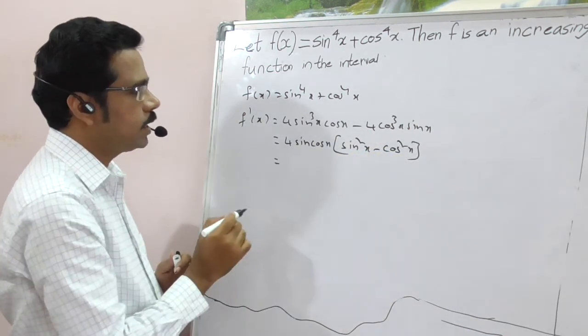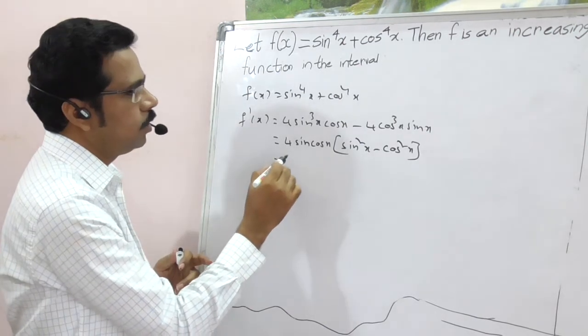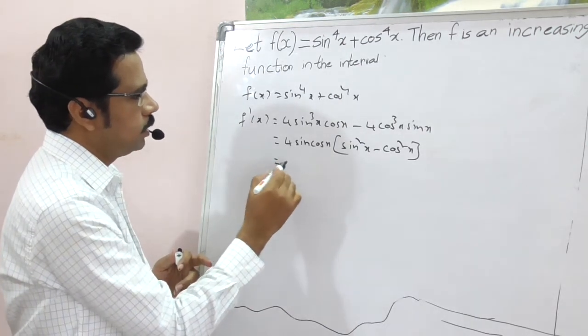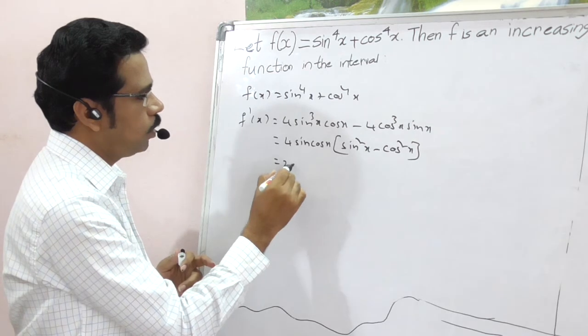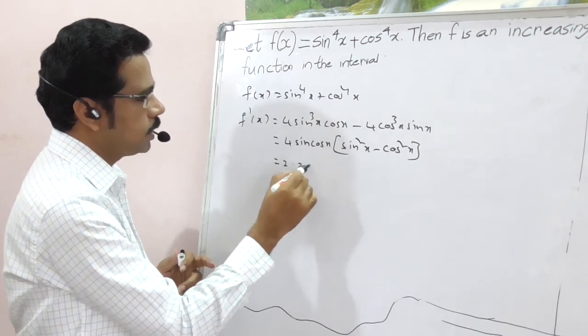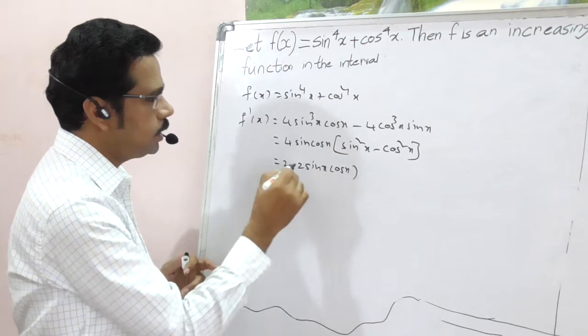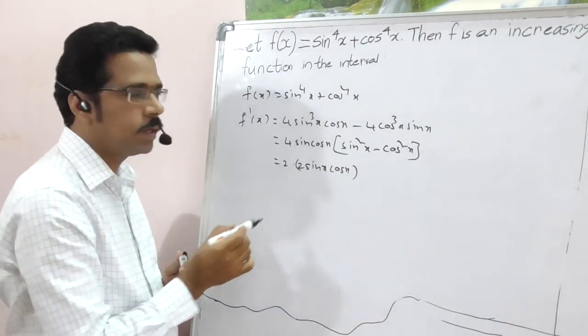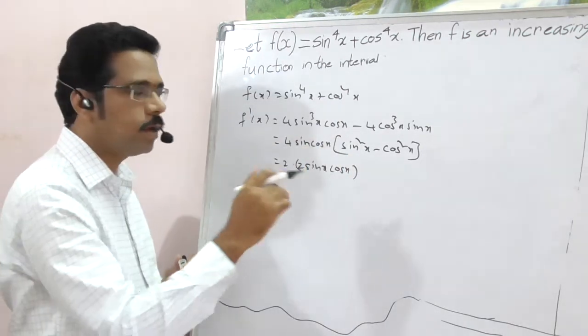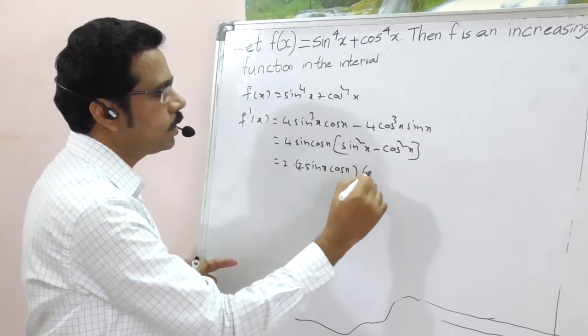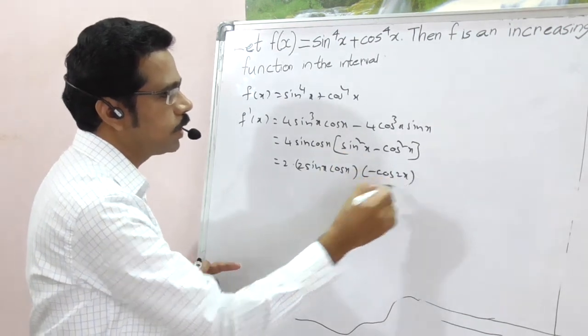What is sin²x minus cos²x? This is nothing but 4sin x cos x. I am writing it as 2 of 2sin x cos x. So sin²x minus cos²x. Cos²x minus sin²x is cos 2x. Here it is sin²x minus cos²x. Therefore, write it as minus cos 2x.